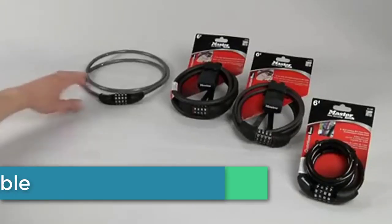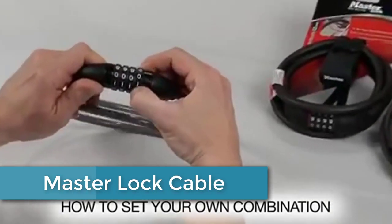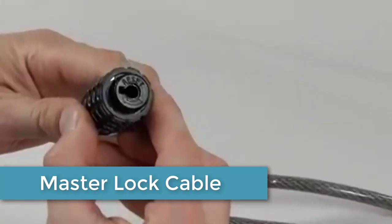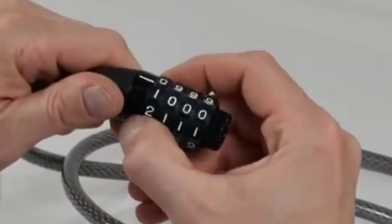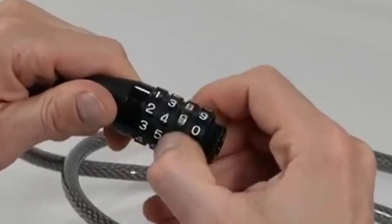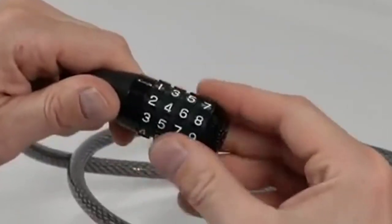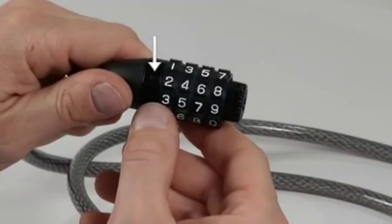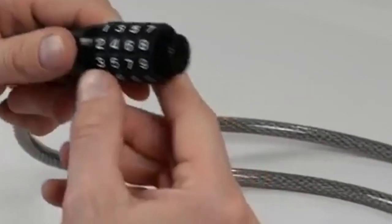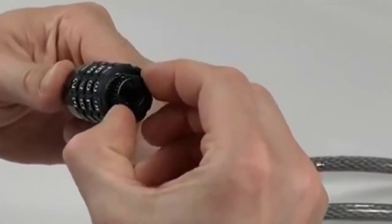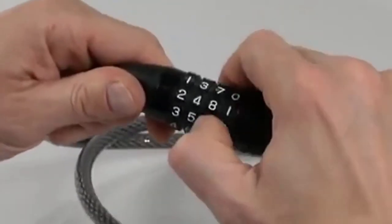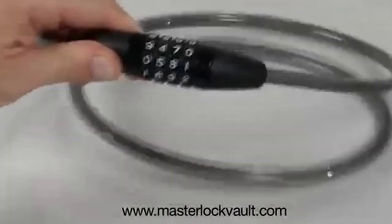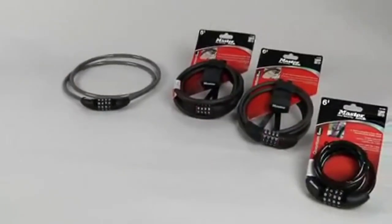At number 4, we have the Master Lock Cable Lock 8122D. This lock features a 6-foot-long braided steel cable for maximum strength and durability, and the Set Your Own Combination feature allows you to choose a personalized code that is easy to remember. The black vinyl coating on the cable also helps protect your bike's paint from damage. This cable lock is perfect for low-to-medium crime areas and can also be used to secure other outdoor equipment.